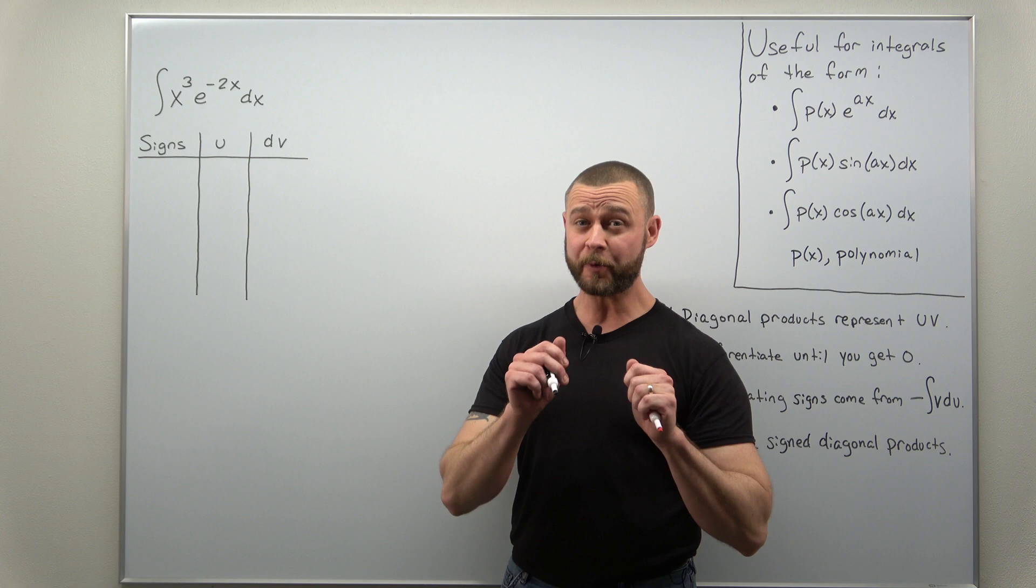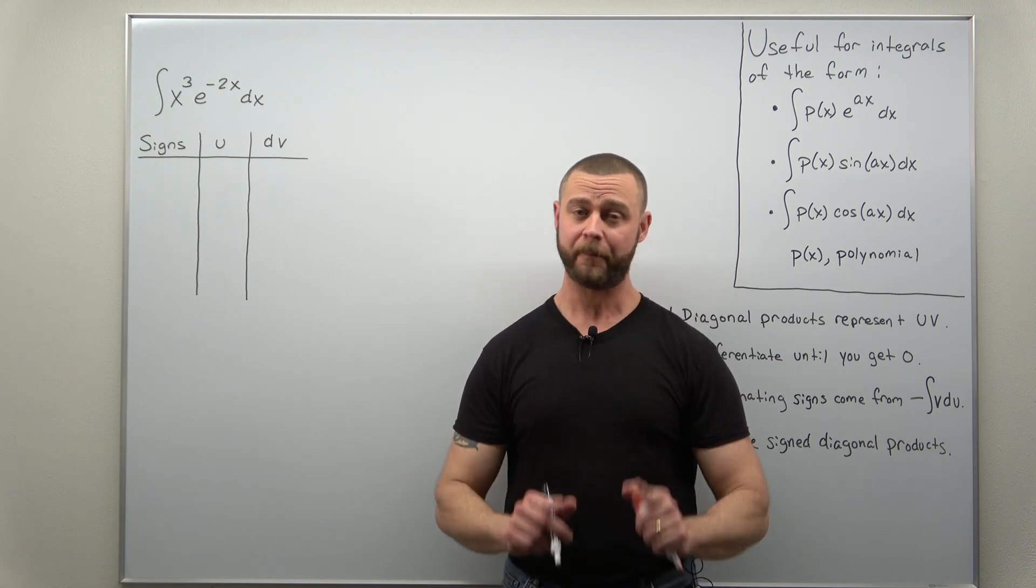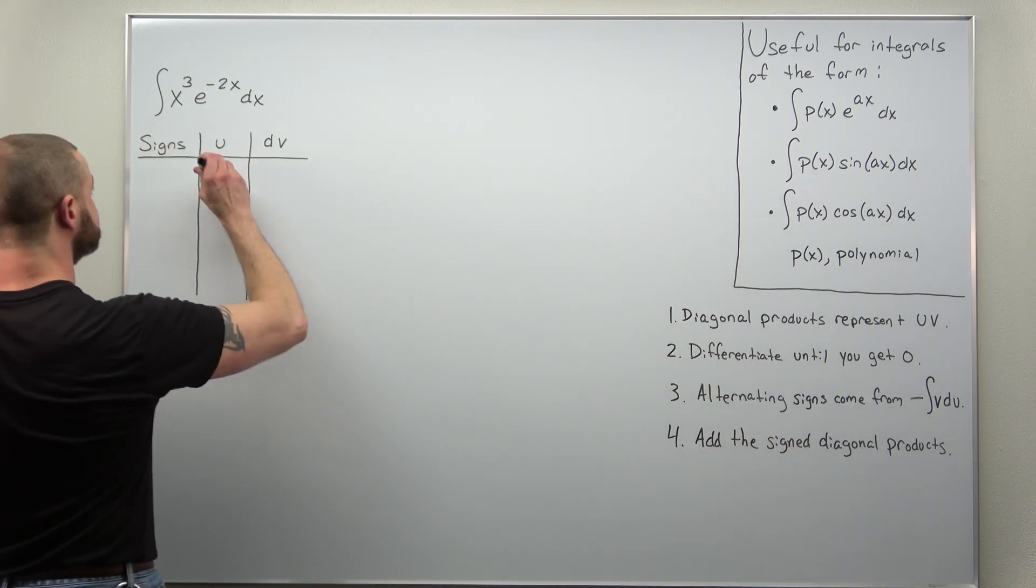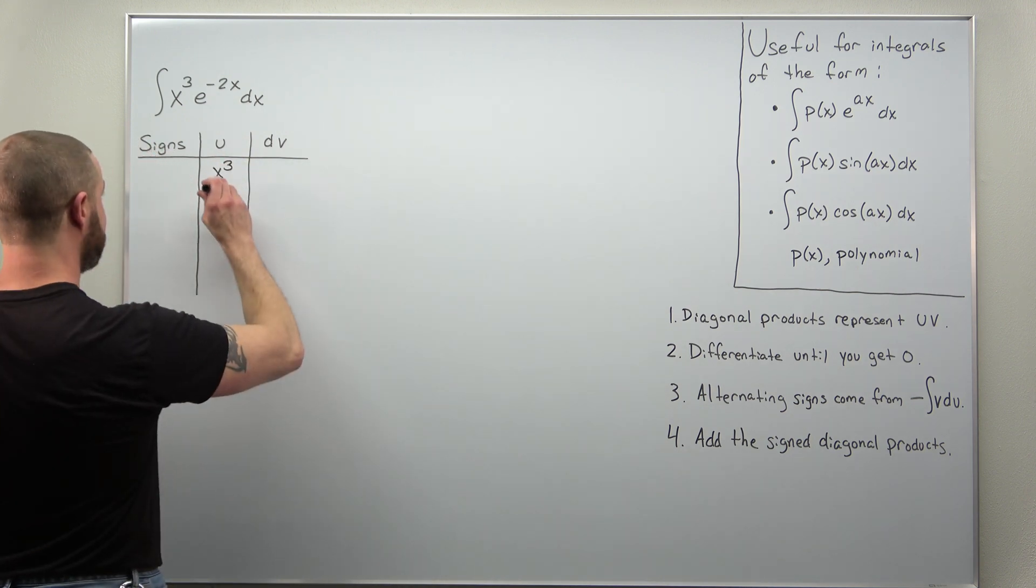If you were to go through integration by parts the normal way, that would take a long time and would be brutal. So let's make our choice here for u as x cubed, and we're going to repeatedly differentiate that.